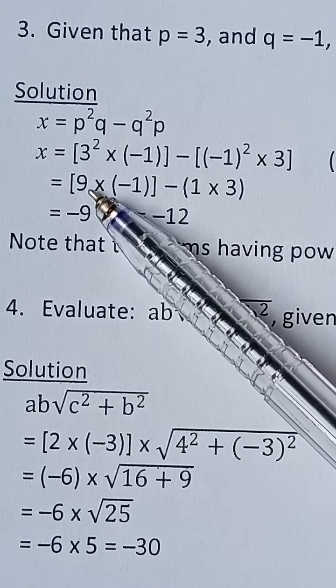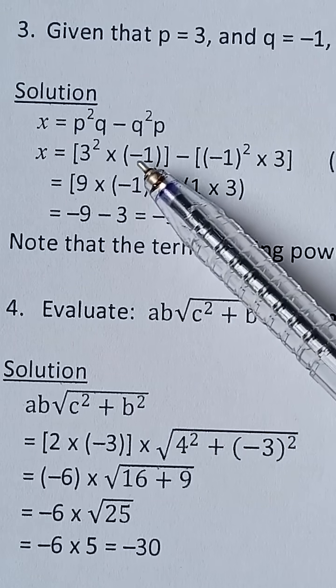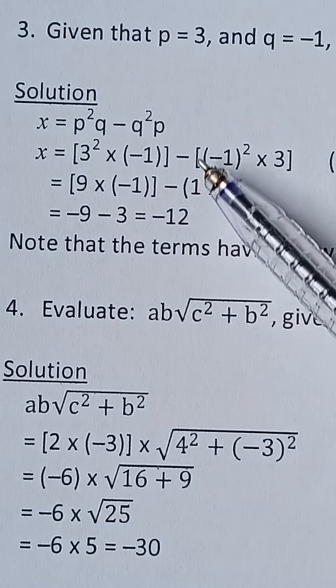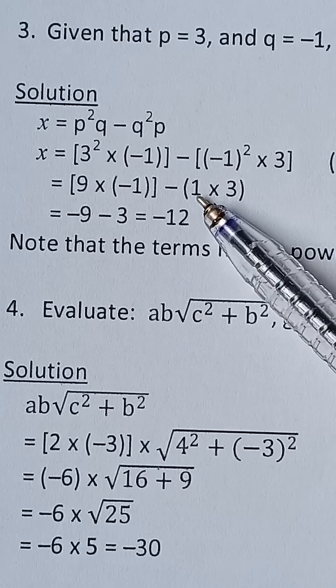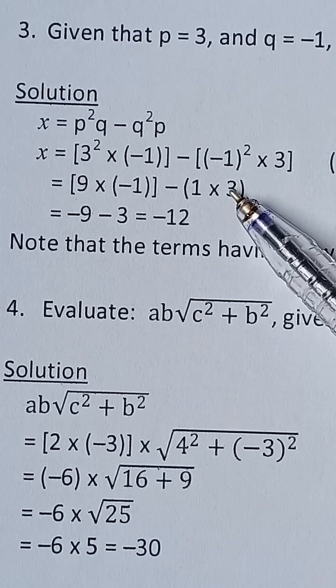So 3 squared will give you 9, multiply by negative 1. You can see it here. Then minus negative 1 squared will give us positive 1, and then multiply by 3.